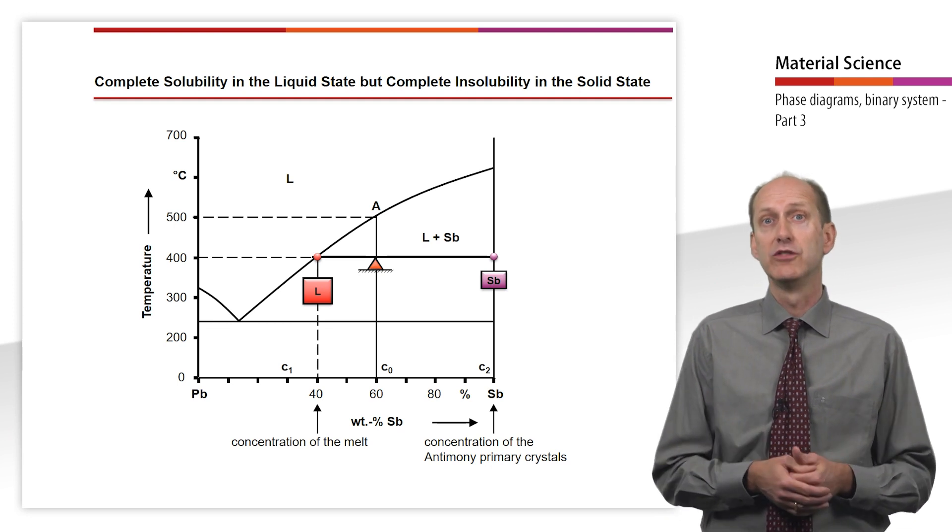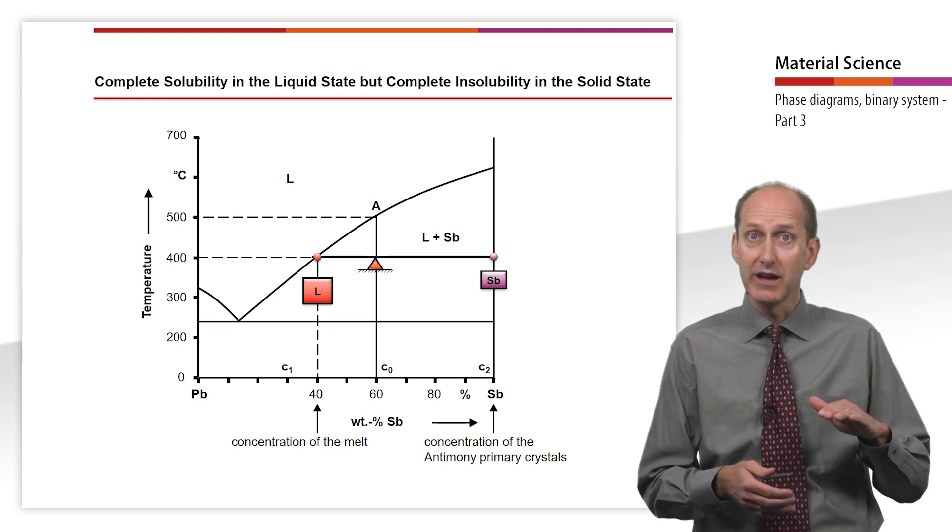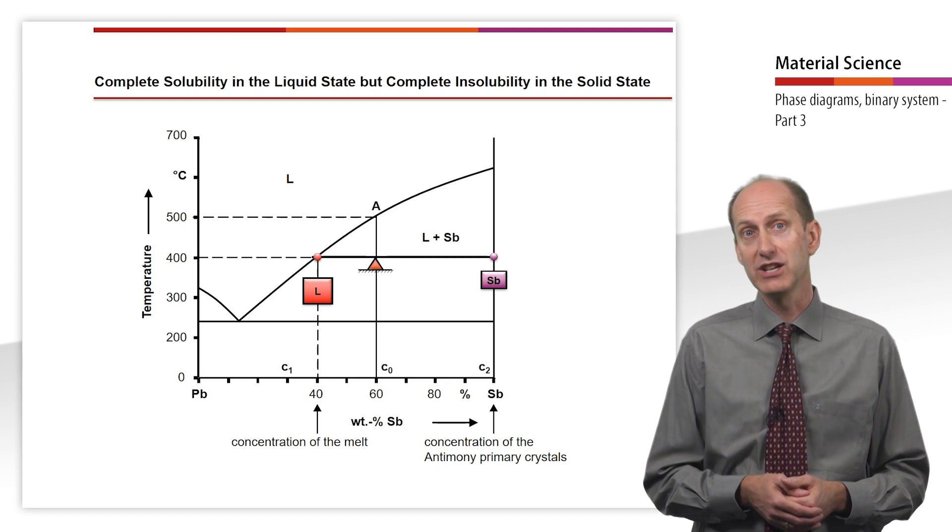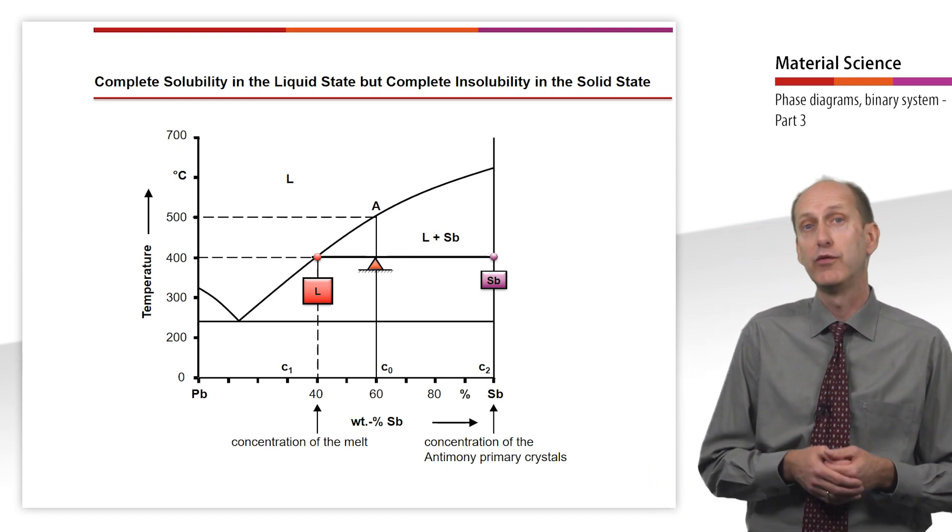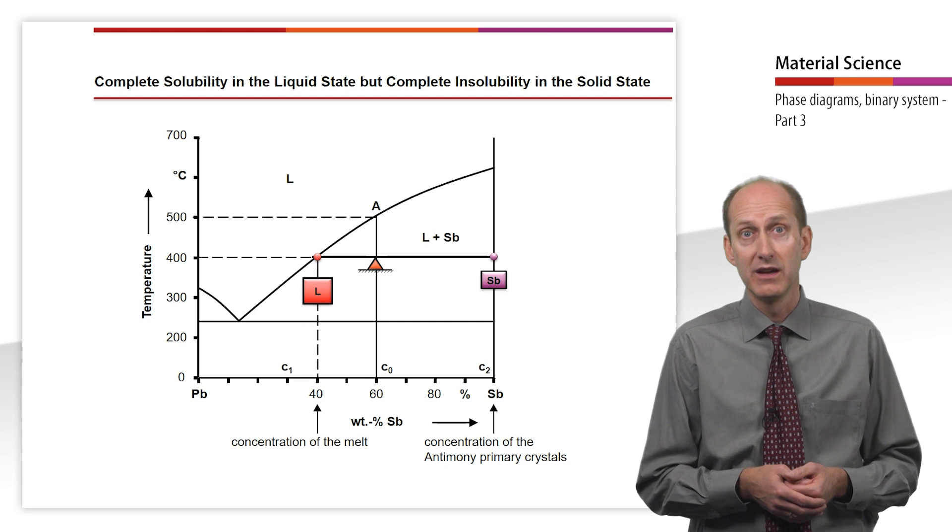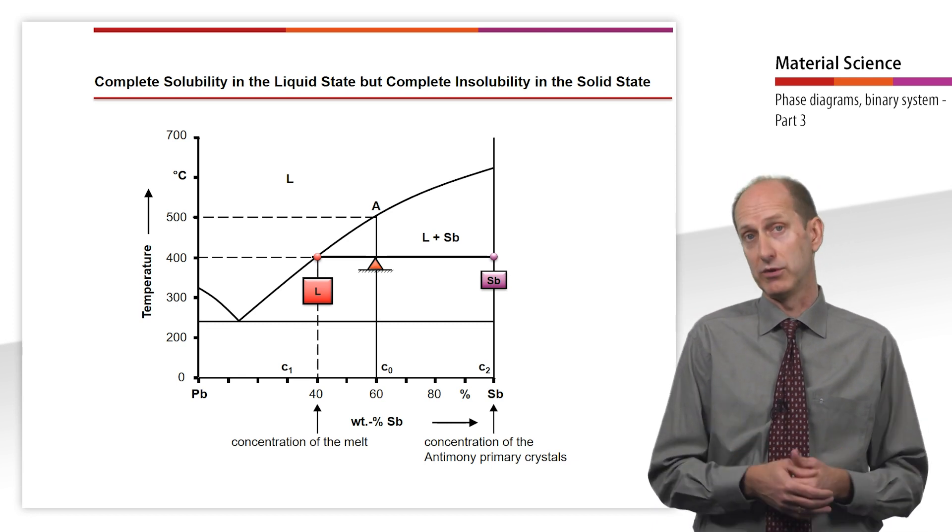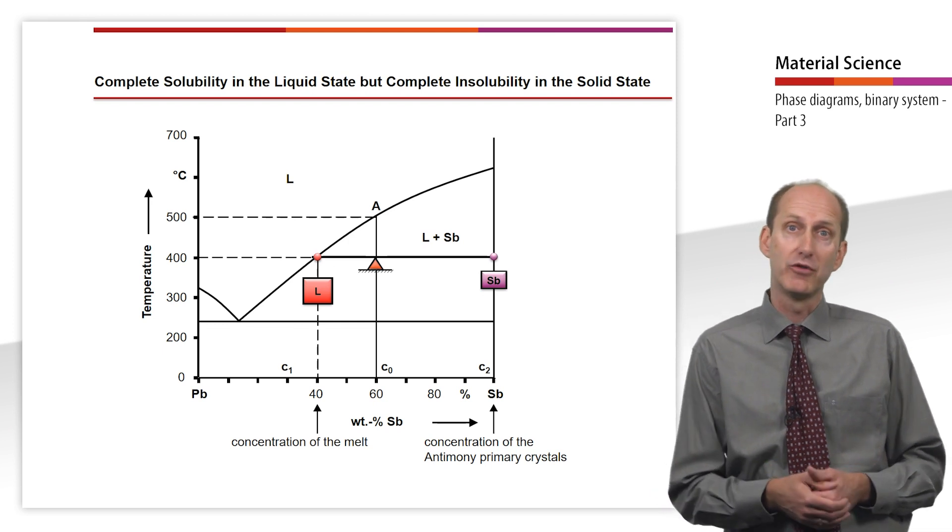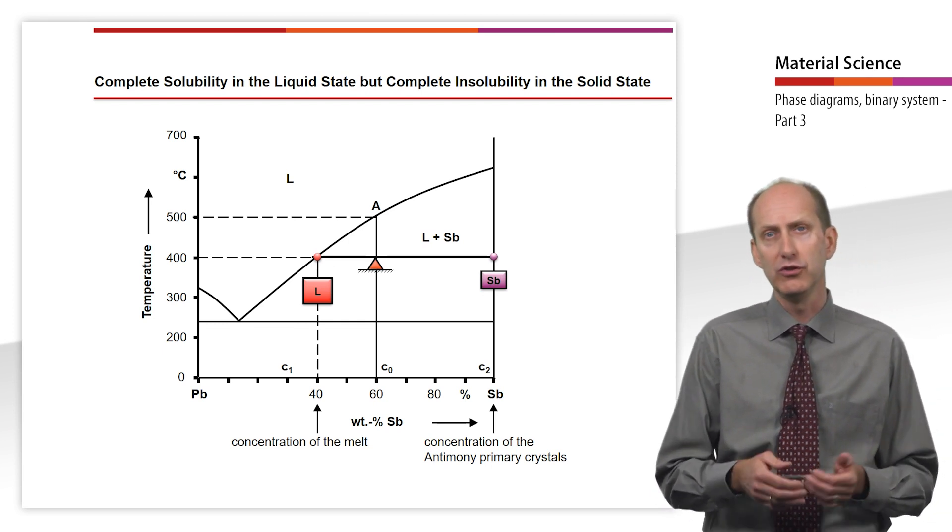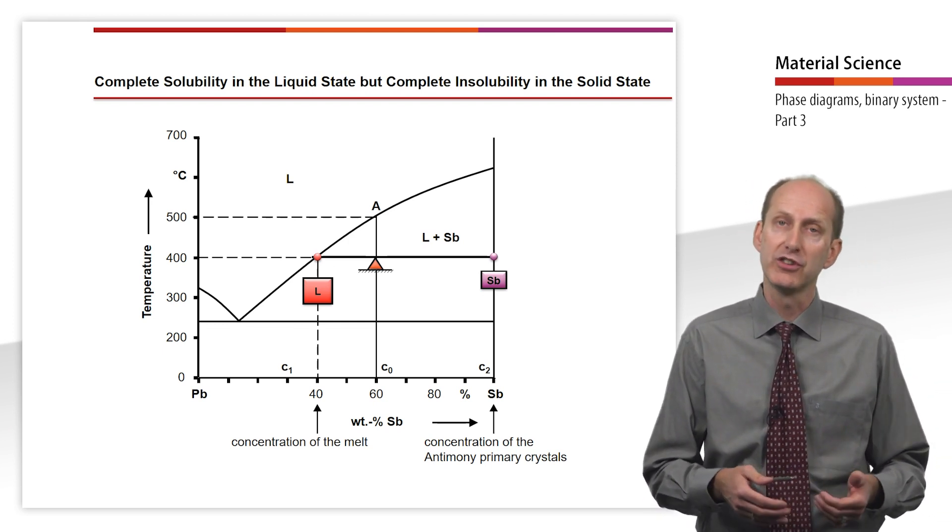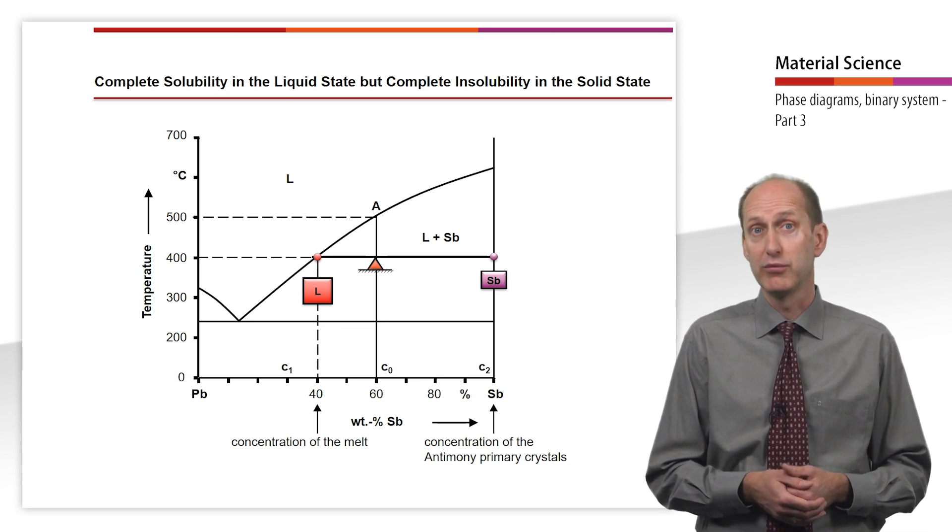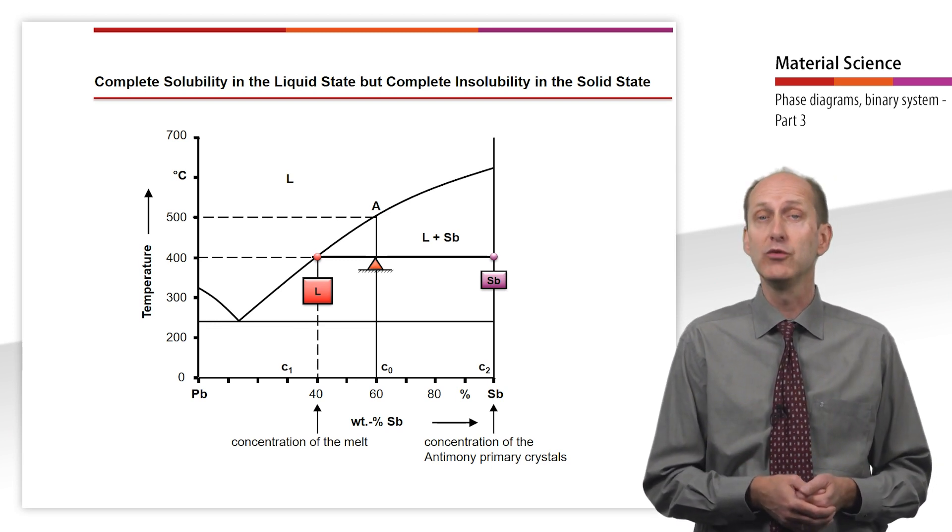If we are interested in the composition of the phases at 400 degree Celsius, we can again draw our lever arm and find that the concentration of our melt has already dropped to 40% antimony, as the primary crystals formed consist of pure antimony. The lever arm ratio of 1 to 2 results in a composition of 1 third antimony primary crystals and 2 third melt.